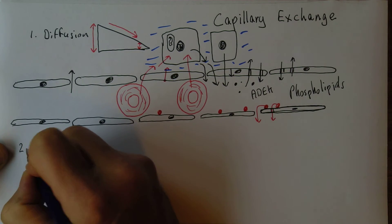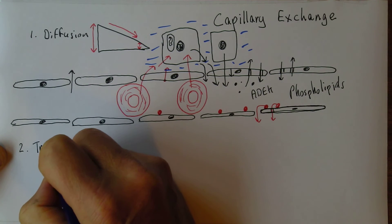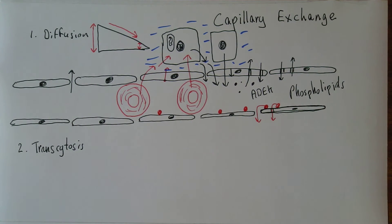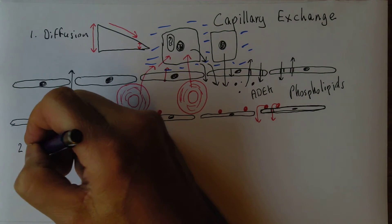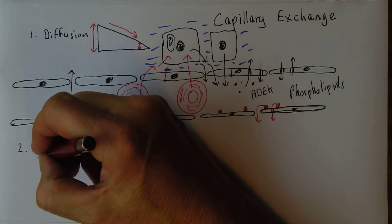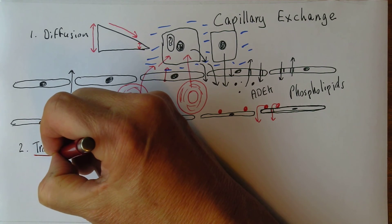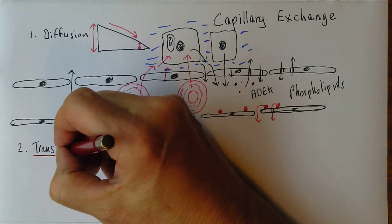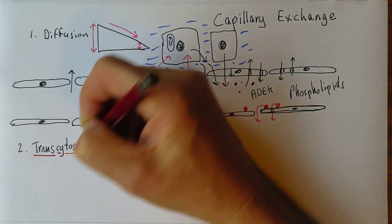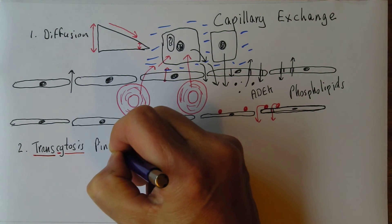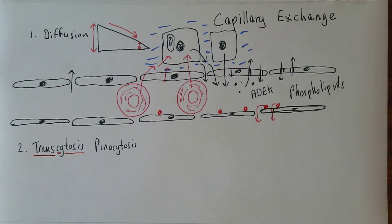The second mechanism is transcytosis. Trans means across — like the Trans-Siberian railway, which crosses Siberia. Cytosis is a suffix meaning to do with cells. So transcytosis means across the cells. And this is a special process called pinocytosis.